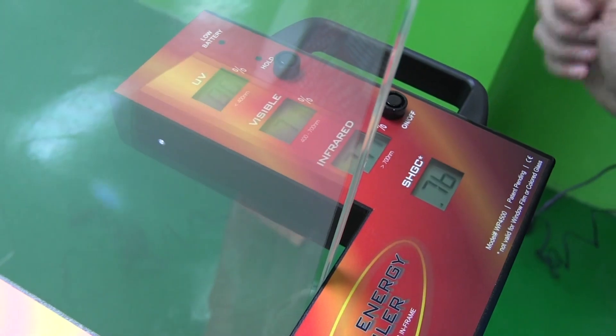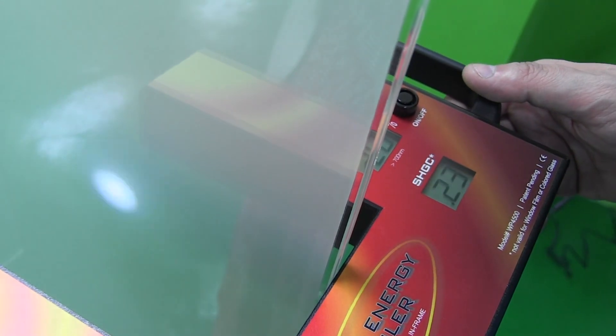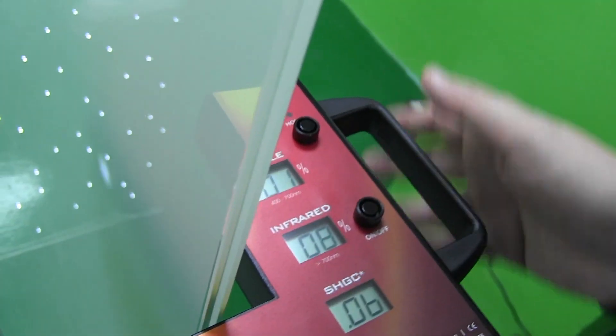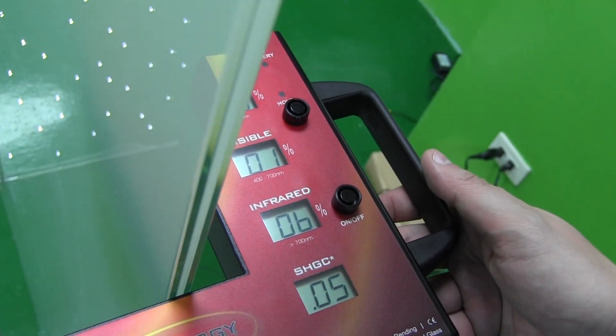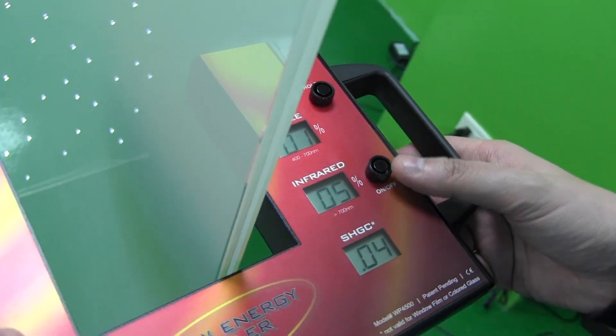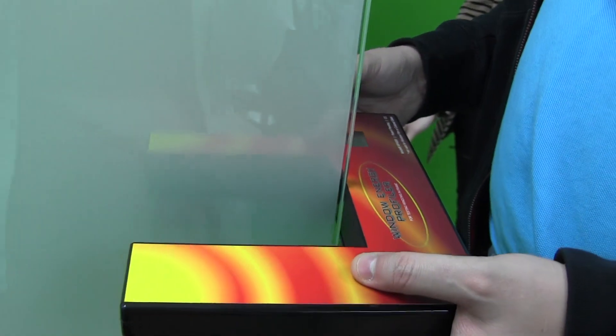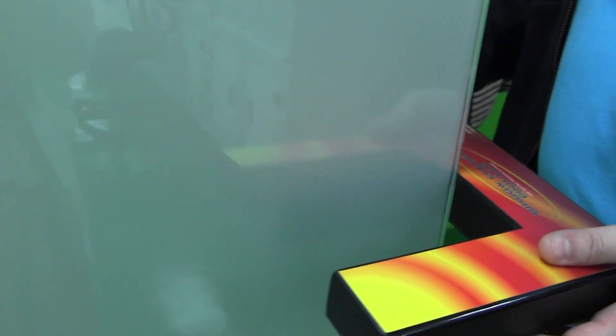But now we're going to switch it off and there you go. Now we have a visibility of 1%. So 99% is getting blocked and only 5% of infrared are going through.